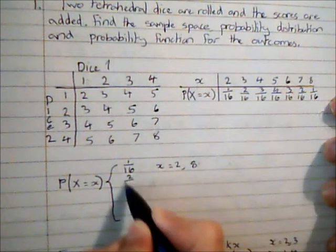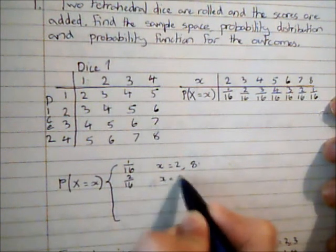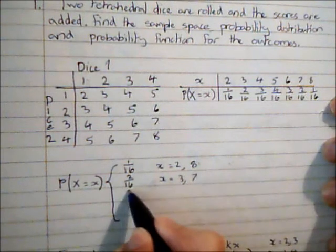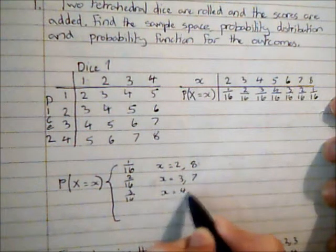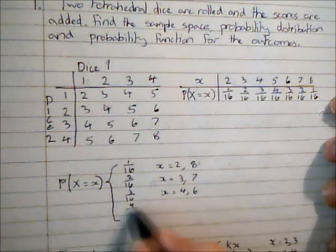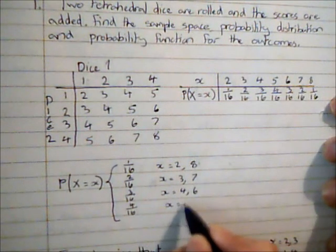I've got a probability of 2/16 when x is 3 or 7, 3/16 when x is 4 or 6, 4/16 when x is 5.